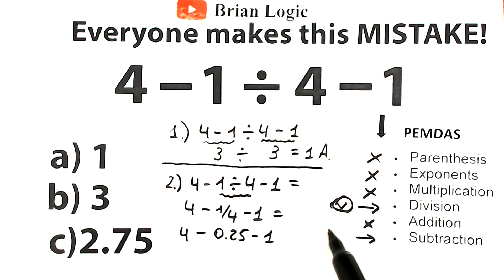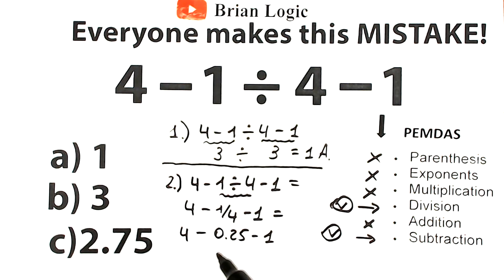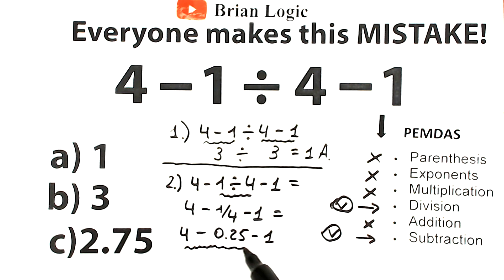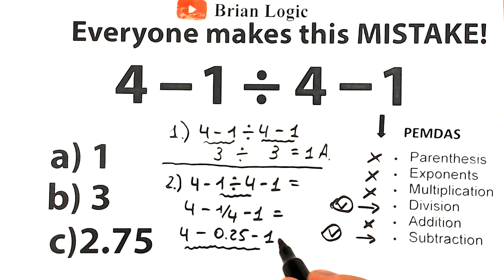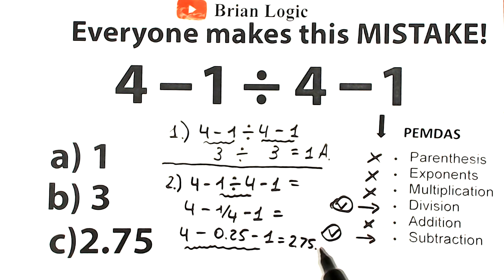The last step is basic subtraction from left to right: 4 minus 1 equals 3, and 3 minus 0.25 equals 2.75, which is option C.